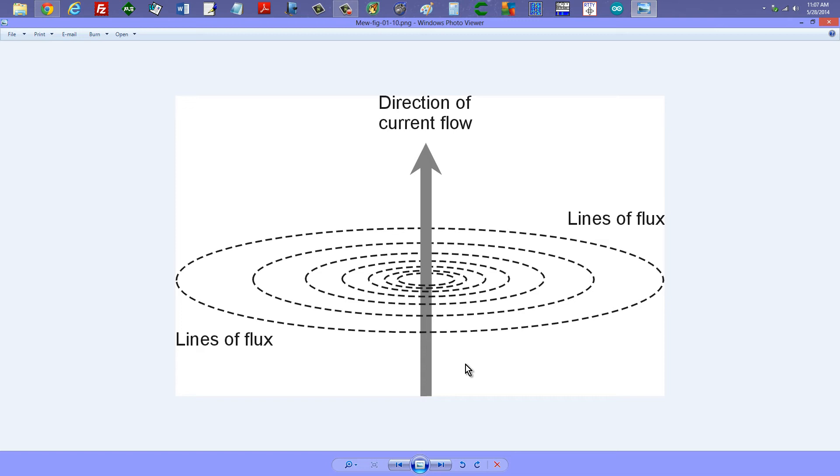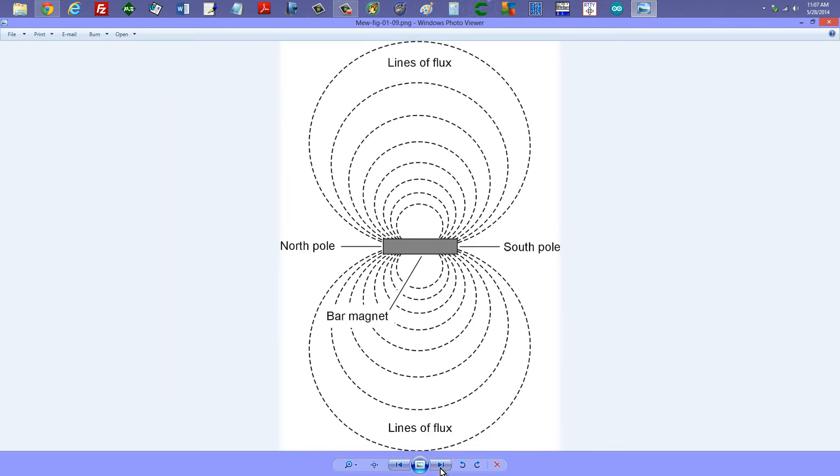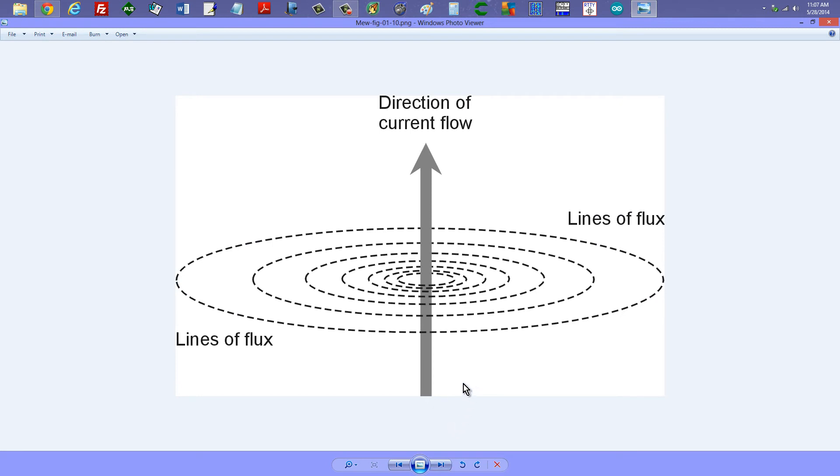Here's another example. This is Figure 1-10. Back here we have Figure 1-9. Figure 1-10. If you have a current flowing in a wire, say that that current is flowing from the bottom of the page to the top. Now that is known as conventional current.